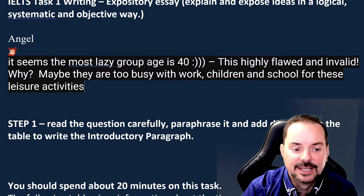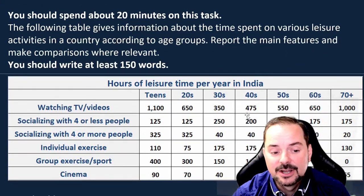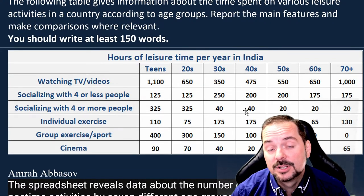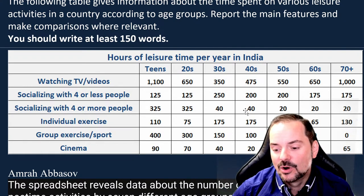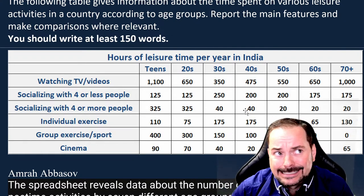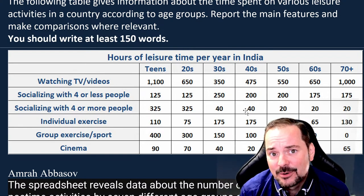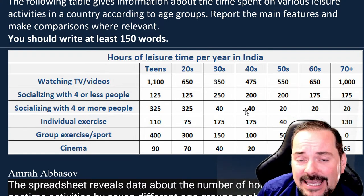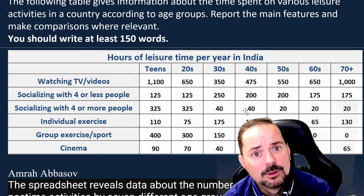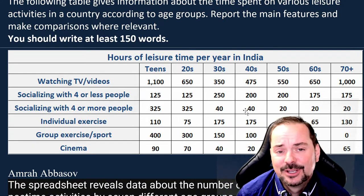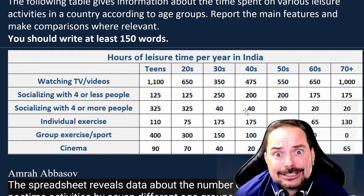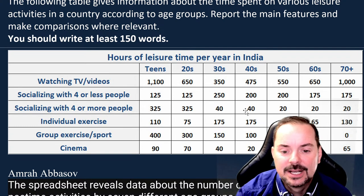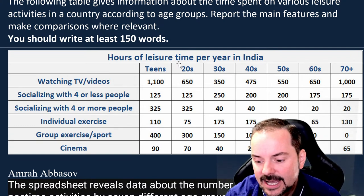Maybe the reason we don't see high numbers for people in their 40s is because they're so busy with their responsibilities they don't have time. Calling them lazy would be like calling your mom and dad lazy for not watching TV when they're working from 8 to 5, cooking dinner, cleaning the house, and helping with homework. You can't make assumptions in data.